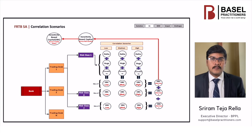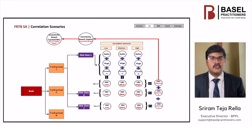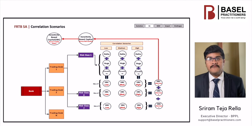Similarly, we need to compute the SPC for all risk classes — you can see SPC one to seven on the right-hand side. Simple aggregation of SPC one to seven gives the sensitivity-based capital charge for all risk classes, which is the trade desk SPC. At the bank level, we aggregate the SPC of all trading desks. Note that we compute only the SPC; however, there are two more components in the standardized approach: default risk charge and residual risk add-on.